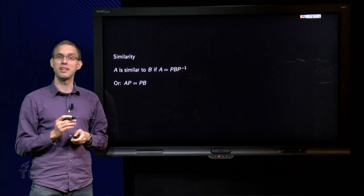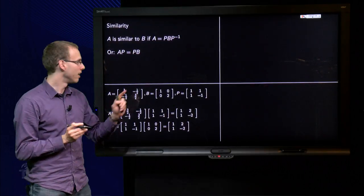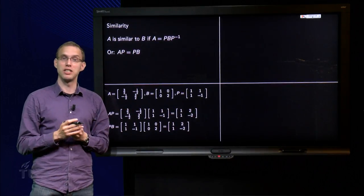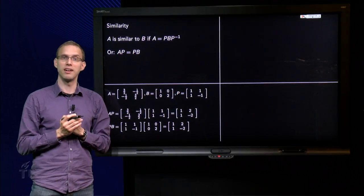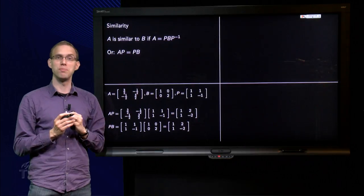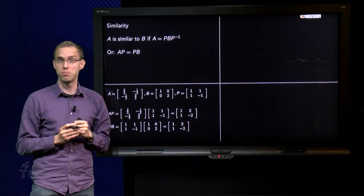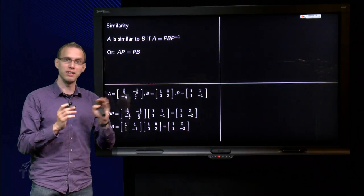So let's look at an example. Here we have our matrix A, here we have our matrix B, and we wonder are they similar or not, and we come up with this P over here. Let's just try this P and see whether A, here we have indeed A times P equals P times B. We will see later on how we find such a P, but for now we will just have it.